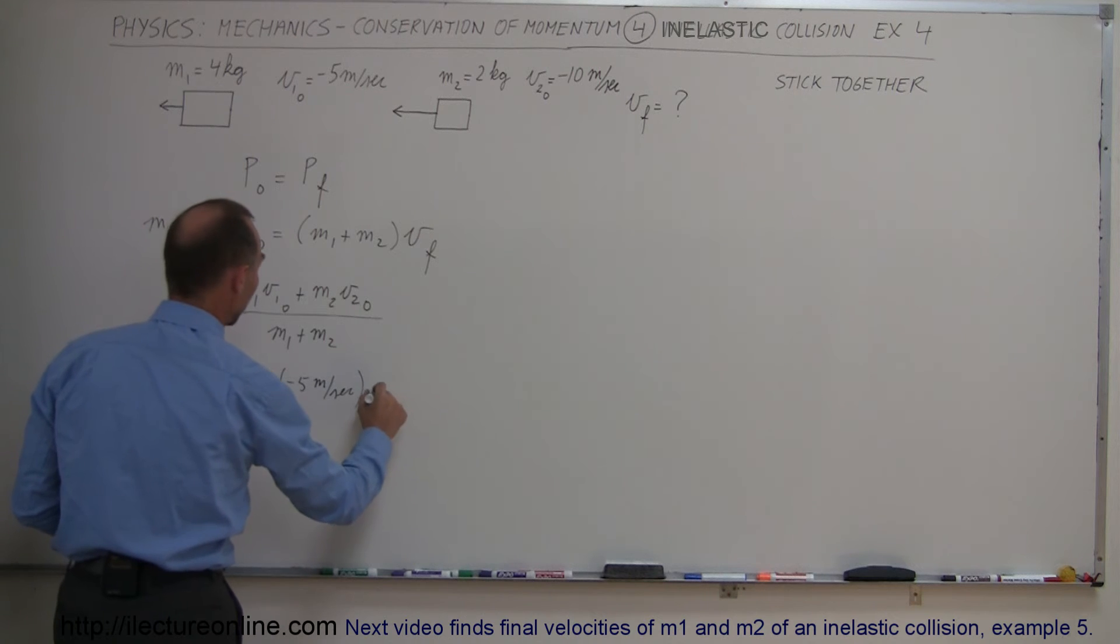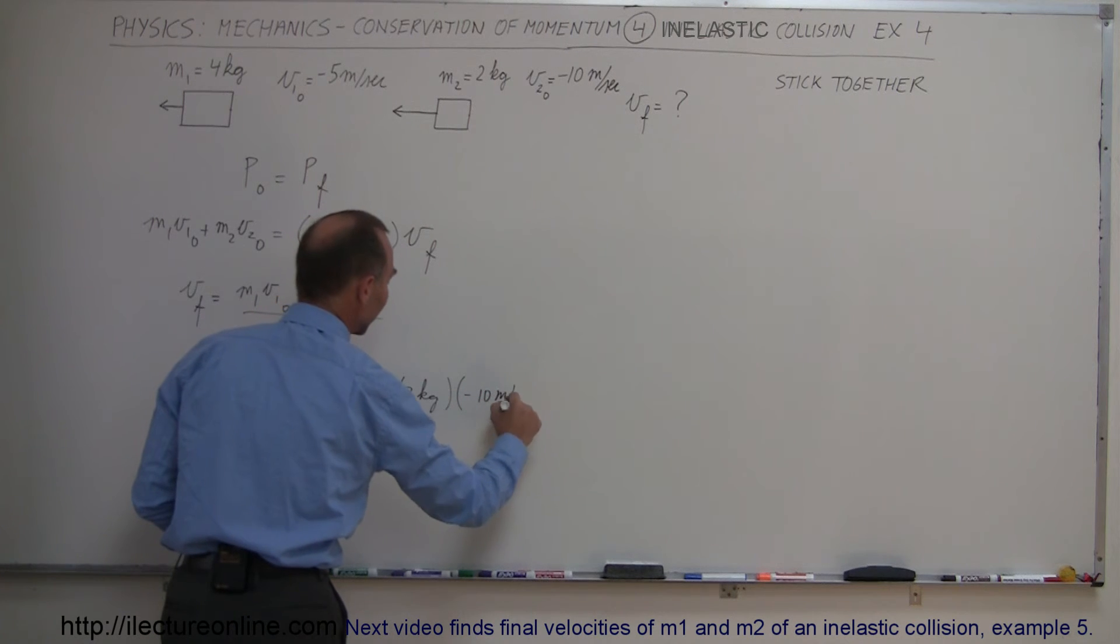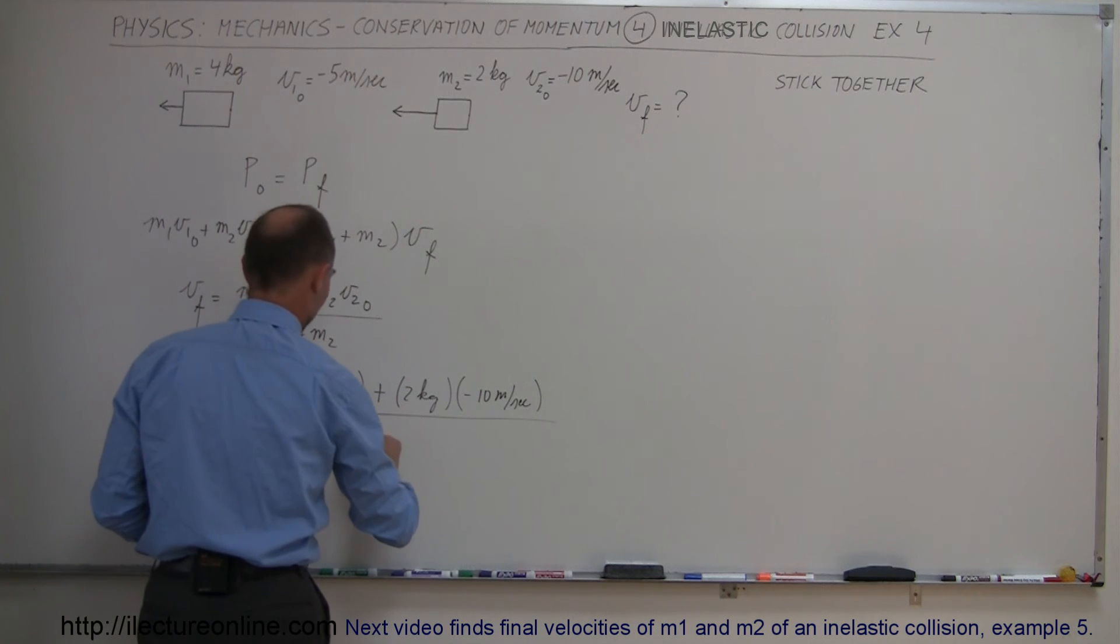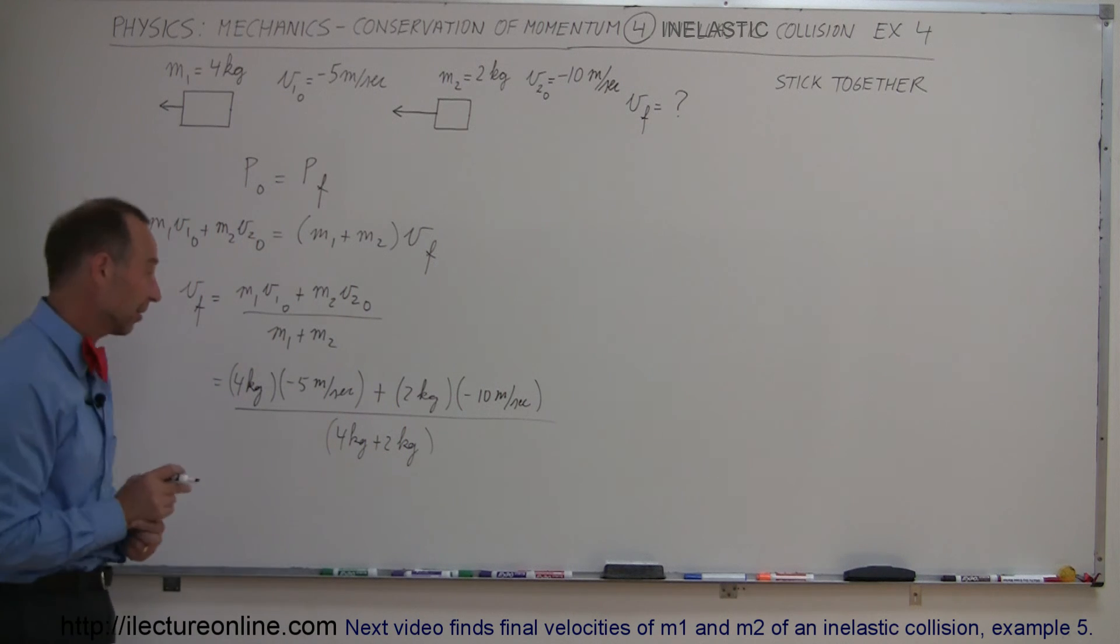So then we have plus m2 which is 2 kilograms times its initial velocity which is minus 10 meters per second. Again indicating to the left and the whole thing divided by 4 kilograms plus 2 kilograms, the sum of the two masses because they do stick together.